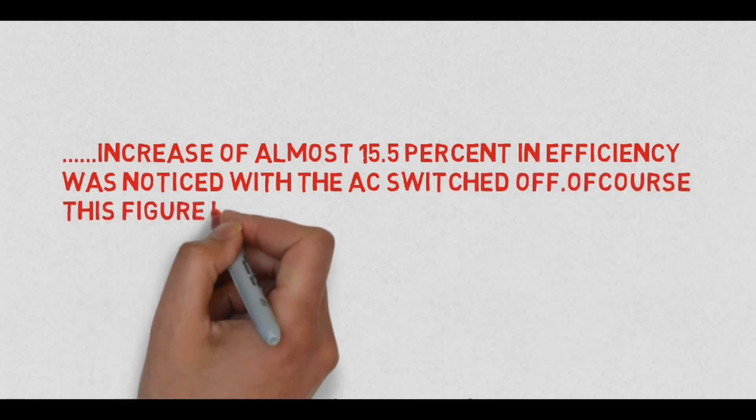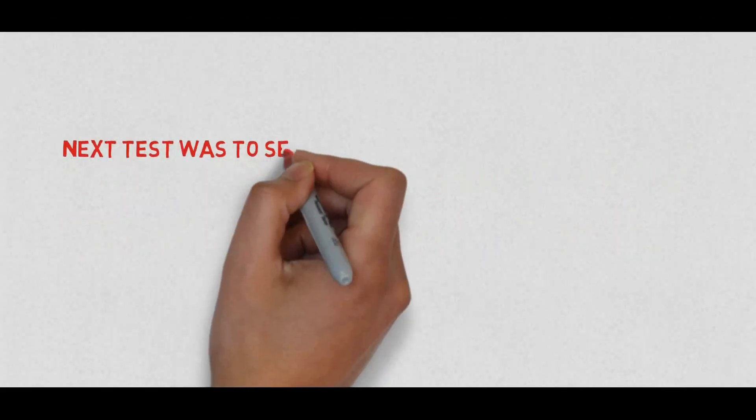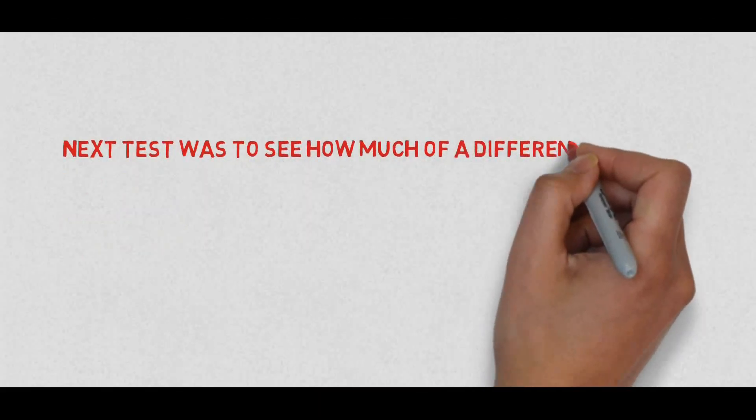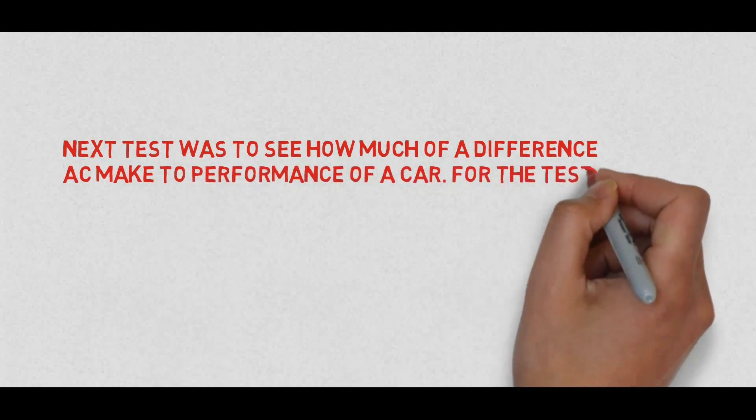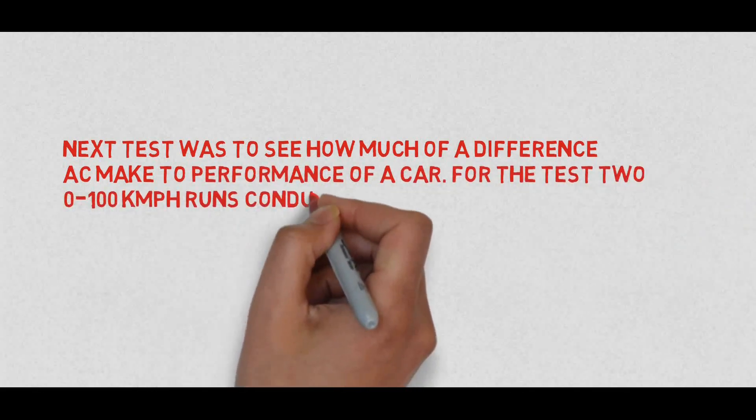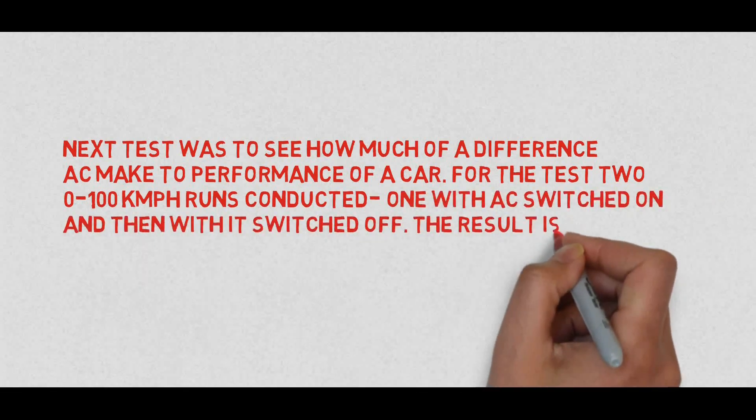Of course this figure is bound to change depending on conditions, driving style and the car itself. Next test was to see how much of a difference AC makes to performance of a car. For the test, two 0-100 kmph runs were conducted, one with AC switched on and then with it switched off. The result is surprising.